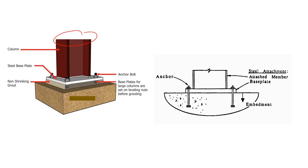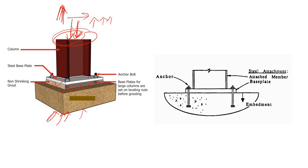If the superstructure has only compressive load, we don't need any anchor bolt. But if there is a slight amount of tensile load or shear force, we need anchor bolt. The compressive load is simply transferred to the pedestal through bearing — no issue. But if we have tensile force, the column tends to be uplifted, and we need something to hold it with the pedestal — and anchor bolt does that job.